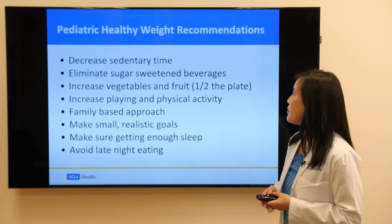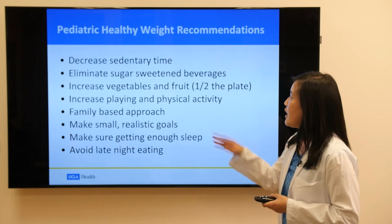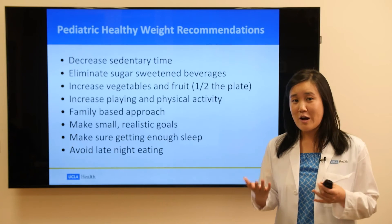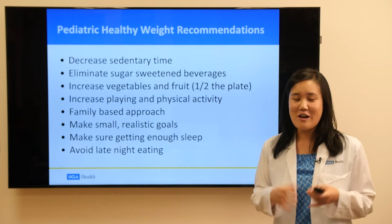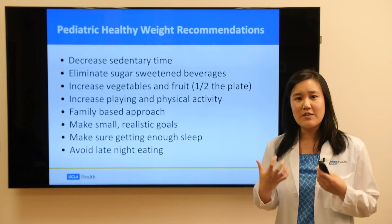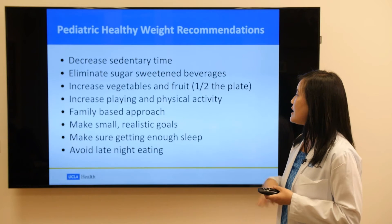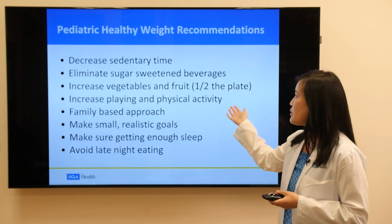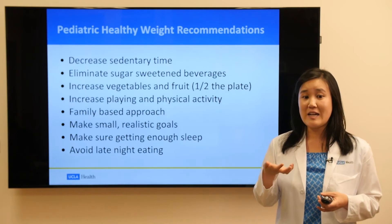To summarize ways to change your lifestyle habits to decrease your chances of getting fatty liver: decrease sedentary time, specifically screen time. iPads and iPhones have become very predominant, and children and teens can spend up to eight hours in front of a screen. I encourage limiting that to two hours max per day. We already talked about eliminating sugar-sweetened beverages. Increase fruits and vegetables, aiming for them to be half of your plate at each meal. We also recommend at least an hour of physical activity each day, ideally an activity that gets your heart rate up for a sustained amount of time.